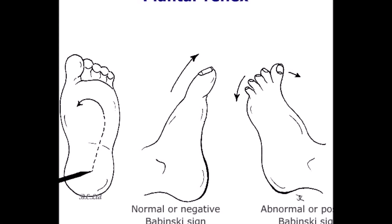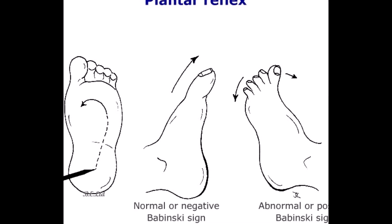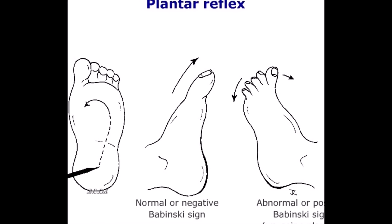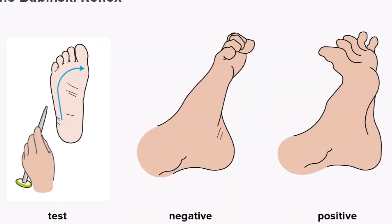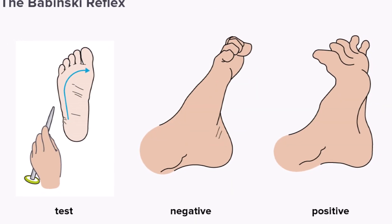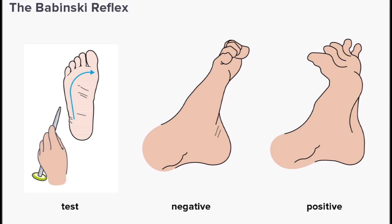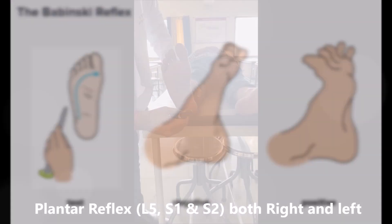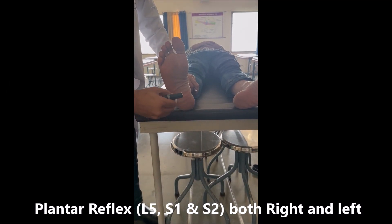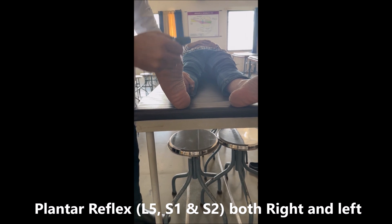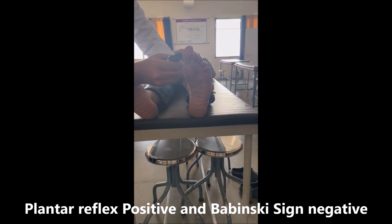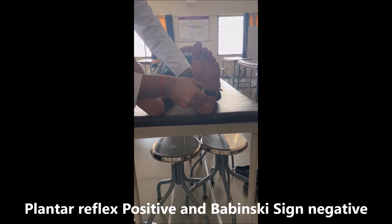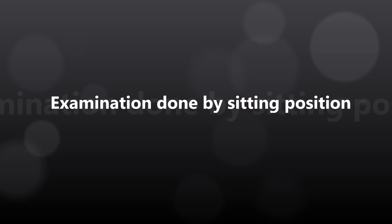Now we move on to the plantar reflex. The root value is L5, S1, S2. Ensure the sole is dry and warm. With the sharp end of the hammer, start stroking from the lower lateral border of the sole, turn medially and proceed up to the base of the great toe. Plantar flexion of the great toe is the normal response. When there is dorsiflexion of the great toe and fanning of the toes, the response is called Babinski sign. This concludes the examination of Motor 2.